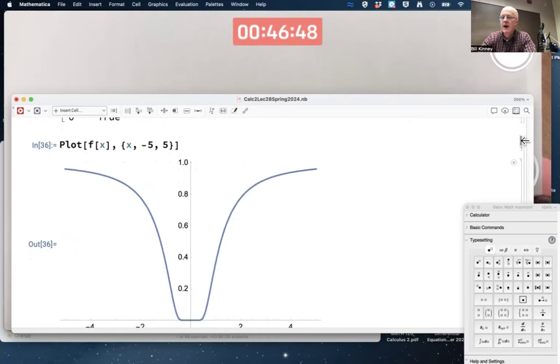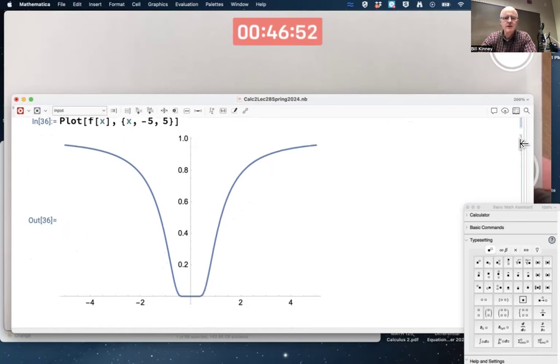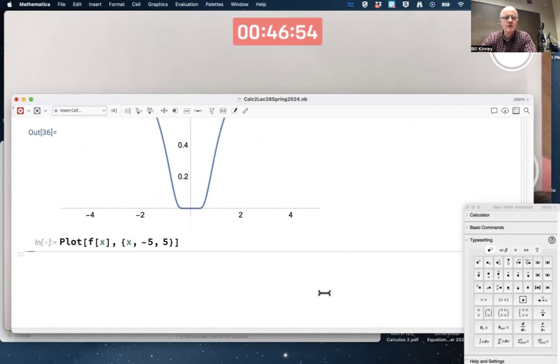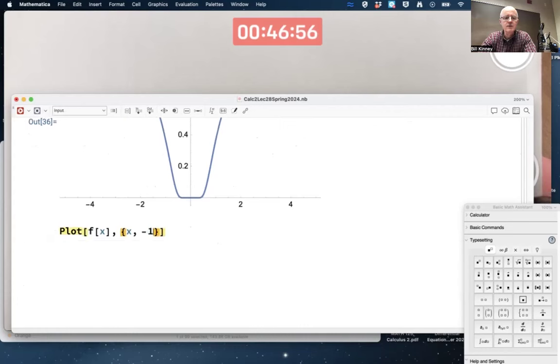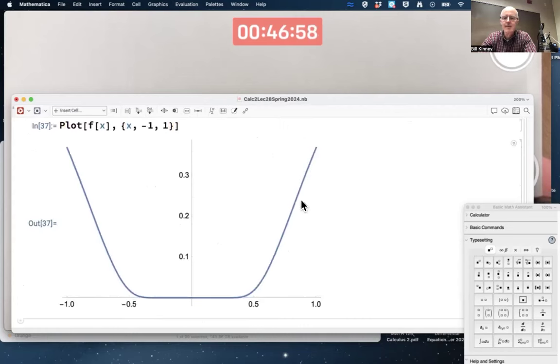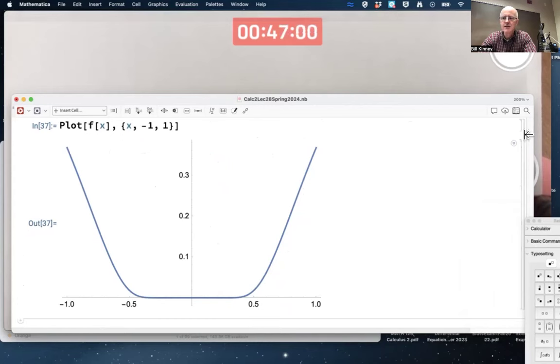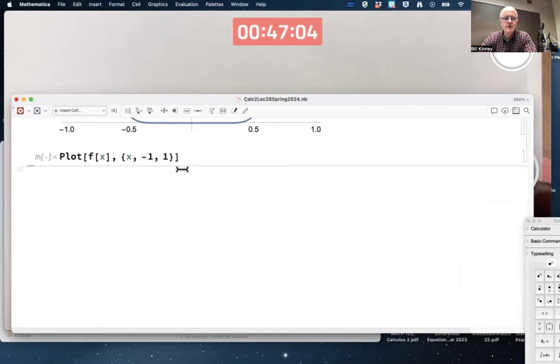Never really seen a graph like that before, have you? Looks very flat near zero, almost horizontal. What would happen as we zoom in closer and closer? Yeah, it's looking very flat near zero. Continue to zoom in closer and closer to zero.